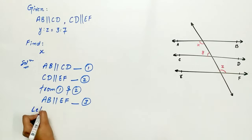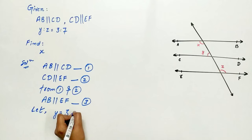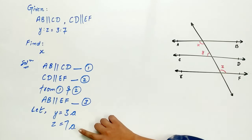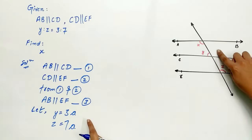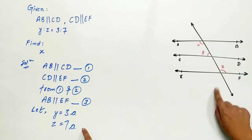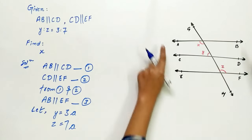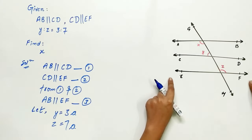Now, let Y be 3A and Z be 7A. A is a variable. You can take any alphabet - it can be B, C, D, E, F, whatever you wish. So, let Y be 3A and Z be 7A. Since AB is parallel to EF,